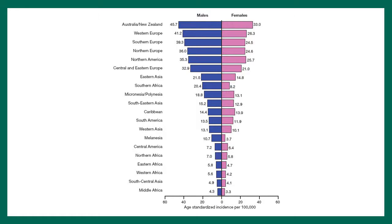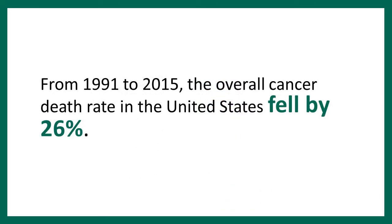A chart shows the prevalence of colorectal cancer across various countries. The higher incidence is mostly in Western countries, while lower incidence is found mostly in Africa and Asia — again, largely related to diet. Between 1991 and 2015, the overall cancer death rate from colorectal cancer fell by 26%, due to better diagnostic methods, increased public awareness, better treatment, and cancer screening and prevention.